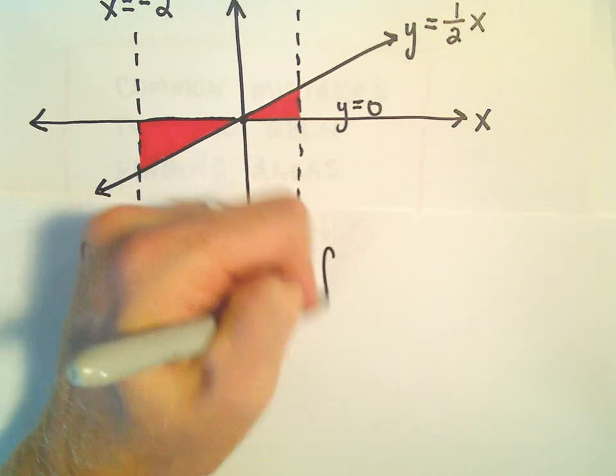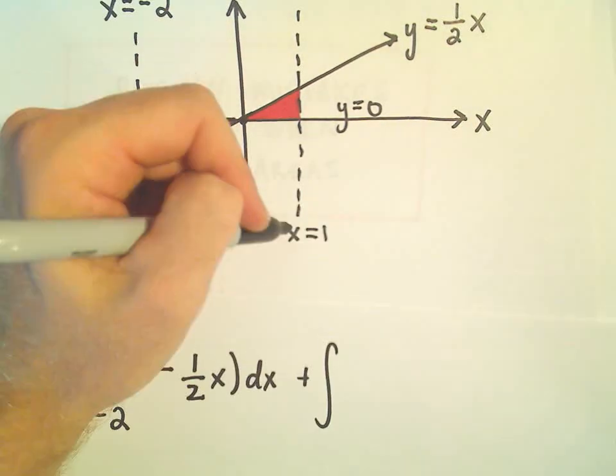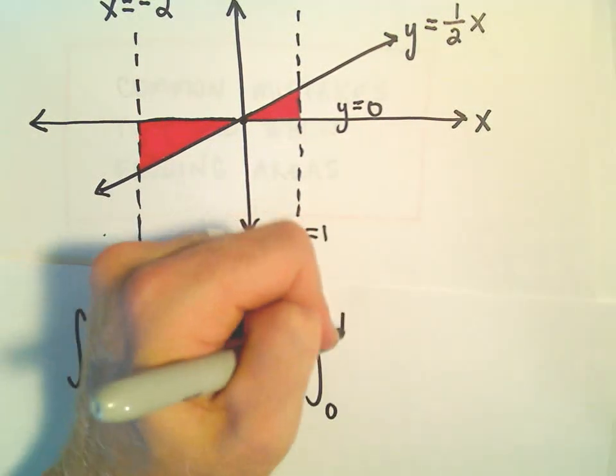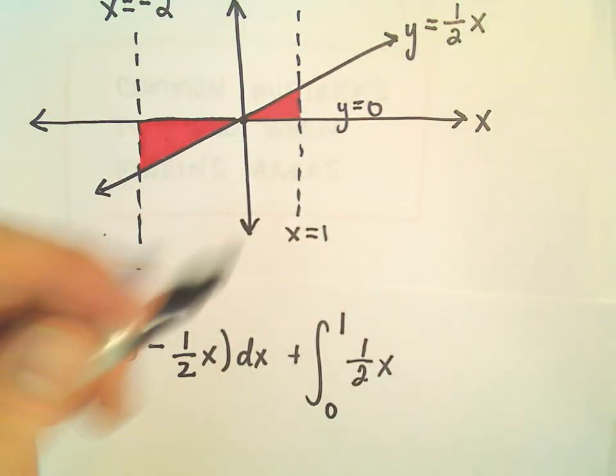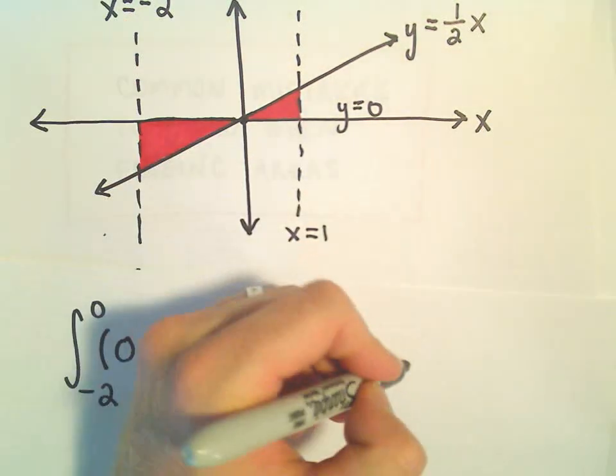And then we would have to integrate from 0 up to x equals 1, and now the top curve would just be 1 over 2 times x, and the bottom curve is just 0.